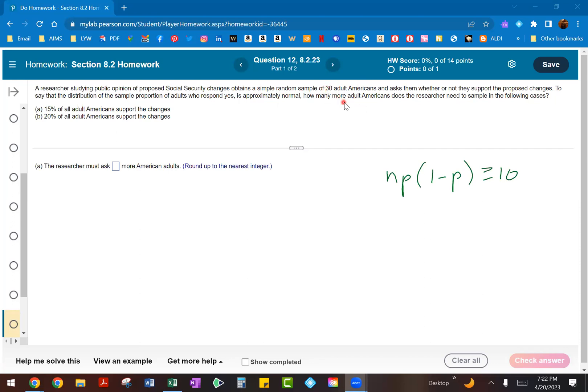So we know that they have a random sample of 30 adult Americans, but they're basically saying if we want this distribution to be approximately normal, how many more adult Americans do we need? So we already have 30, but we need more. And based on that, they're telling us what the percentage is going to be. So they're telling us 15% of all adult Americans support the changes, and 20% of all adult Americans support the changes. So you've got part A and B with two different percentages. What you're basically doing here is trying to find the n value, what should your sample size be, so that your distribution will be approximately normal.